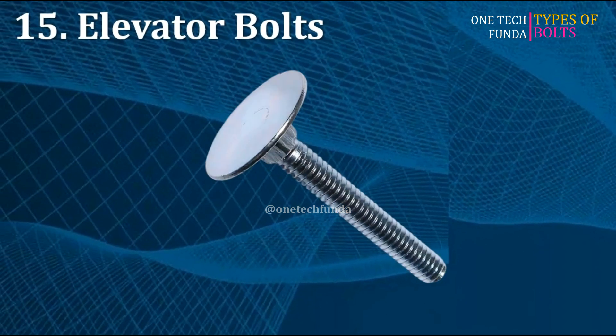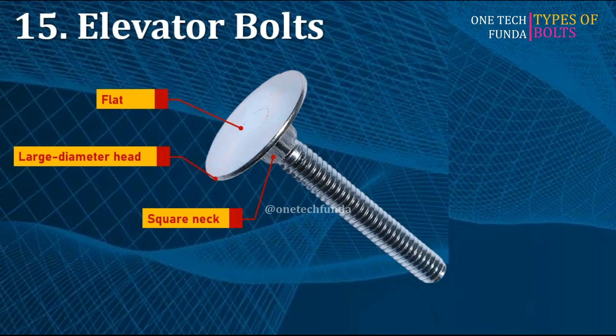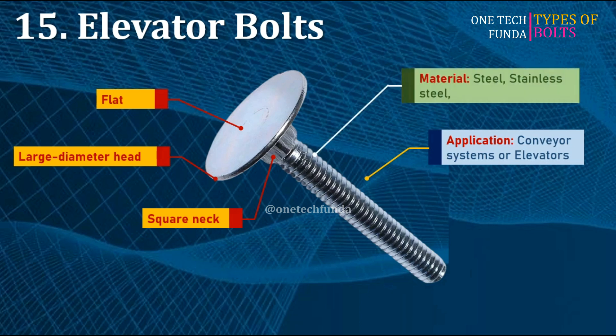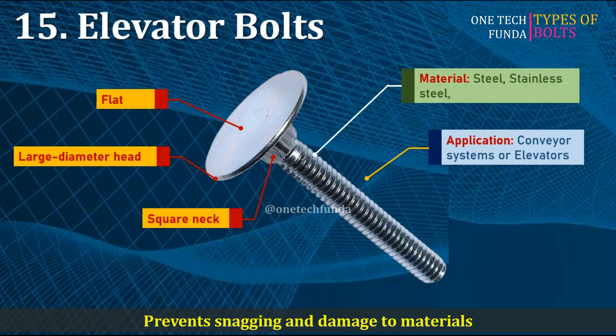Elevator bolts have flat, large-diameter heads with a square neck. Used in conveyor systems or elevators. Materials include carbon steel and stainless steel. The main advantage is they prevent snagging and damage to materials.